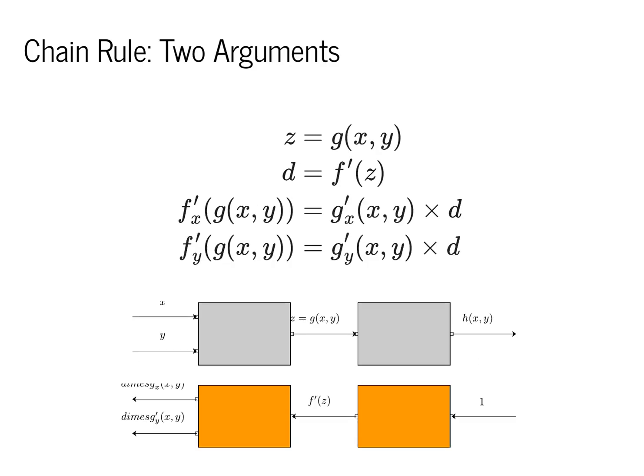In more complex cases, such as two argument functions, the complexity is hidden in the box that is used. In this example, the first box takes two arguments, but we can still run the same chain rule process from right to left.